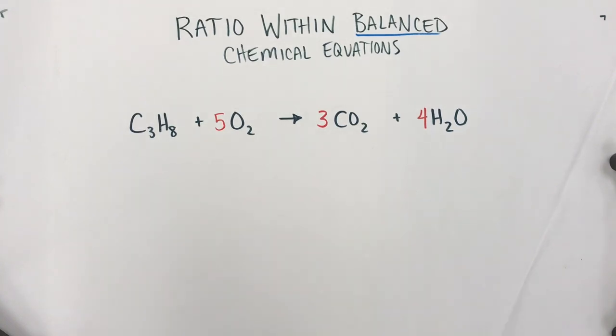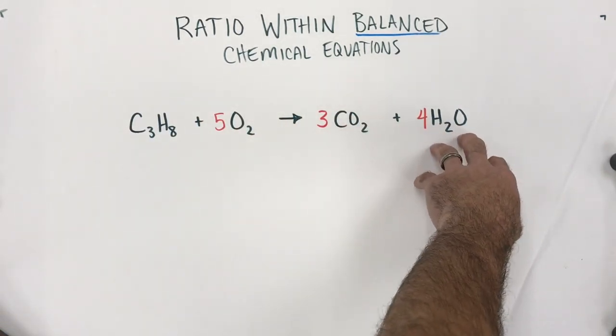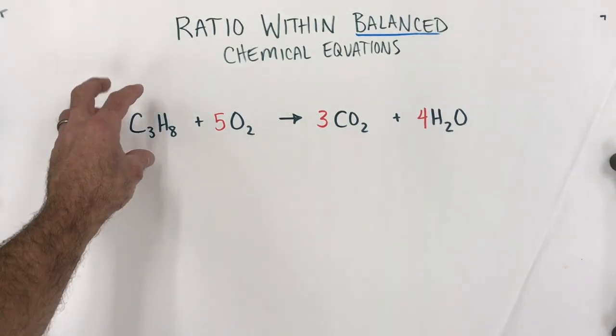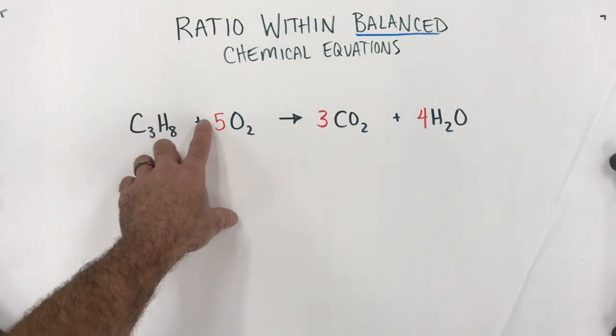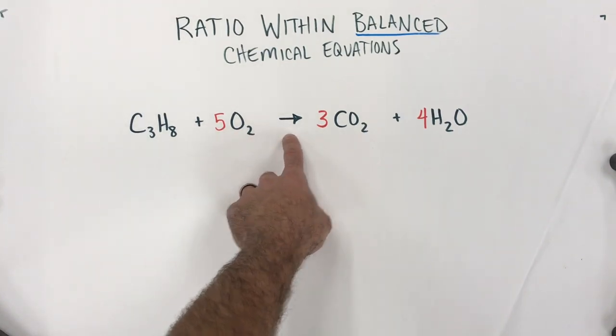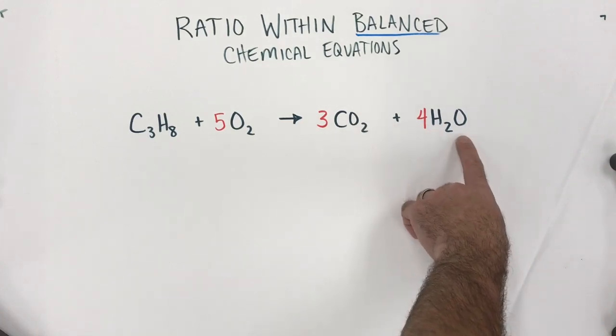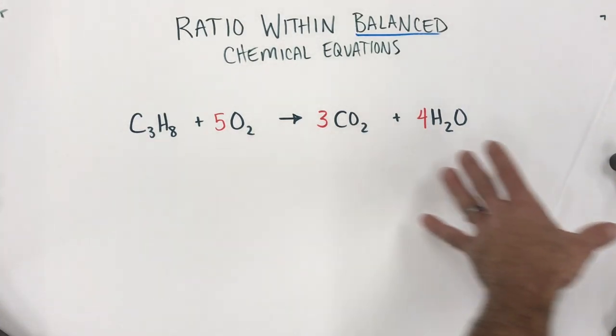Now that we have it balanced, what we want to look at is this idea of the ratio that's present here. This is really telling us propane plus oxygen produces carbon dioxide and water. But even more than that, one propane molecule reacts with every five oxygen molecules to produce three carbon dioxide along with four water. It will always be in that ratio.